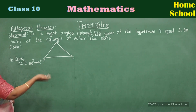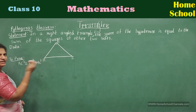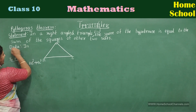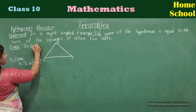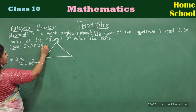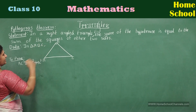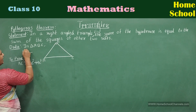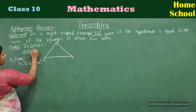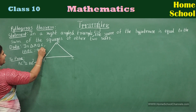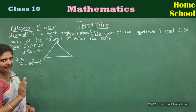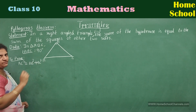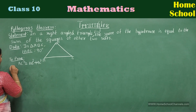Now, data. Given: it is a right angled triangle, in triangle ABC, right angled at B. Angle ABC is equal to 90 degrees. That much is enough in data. To prove: AC² = AB² + BC². Construction.